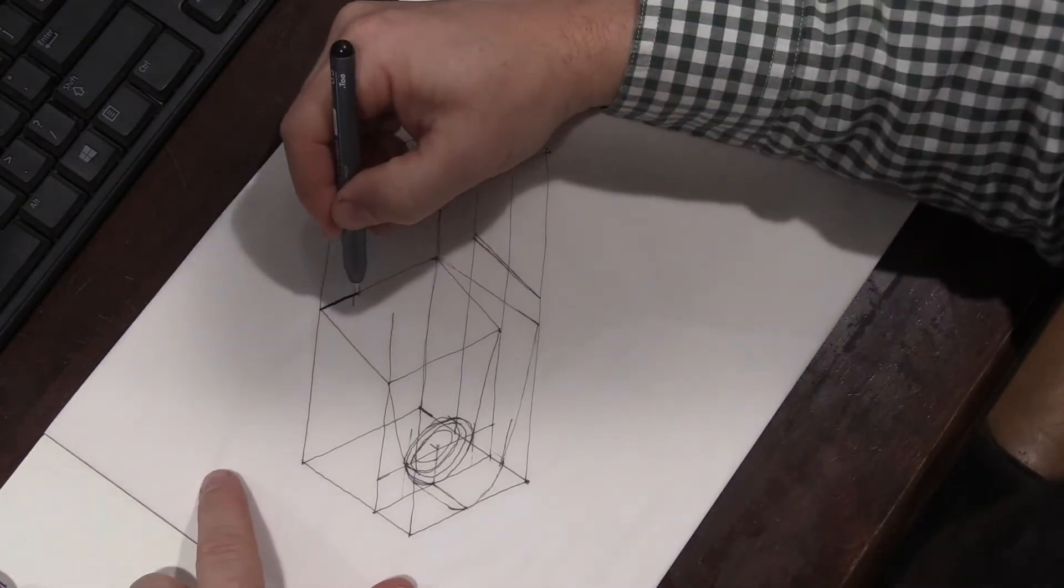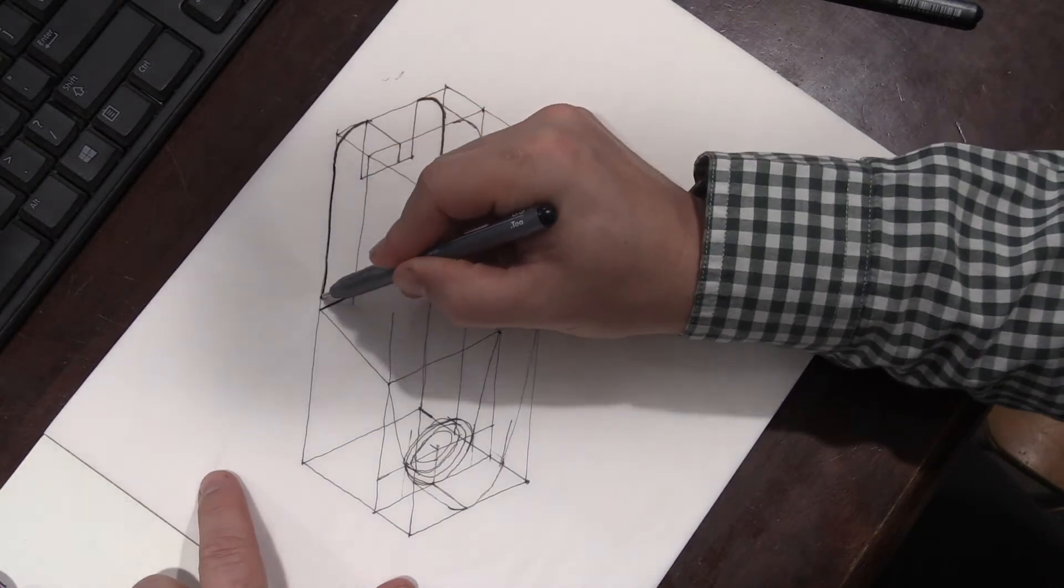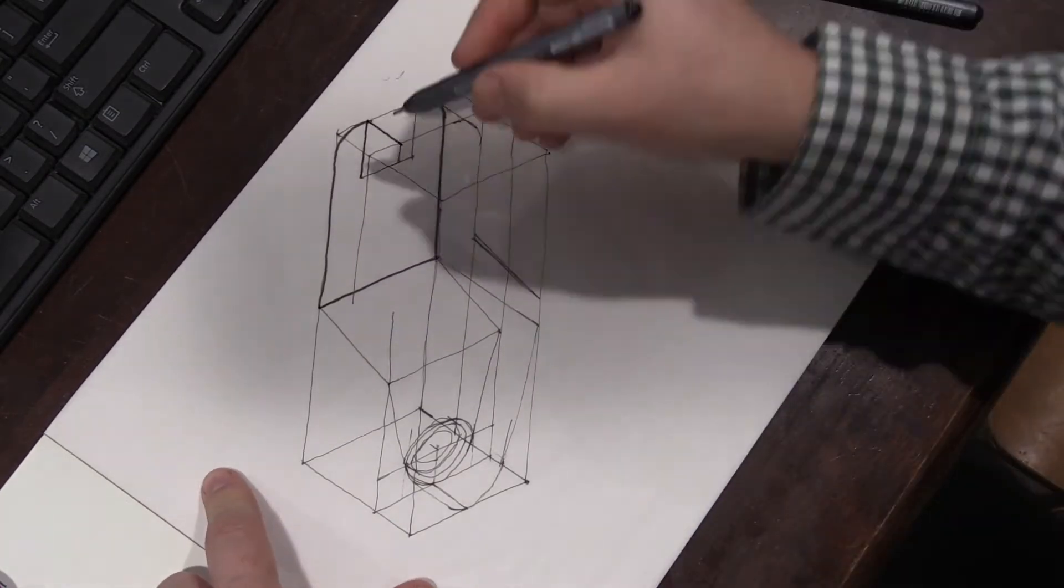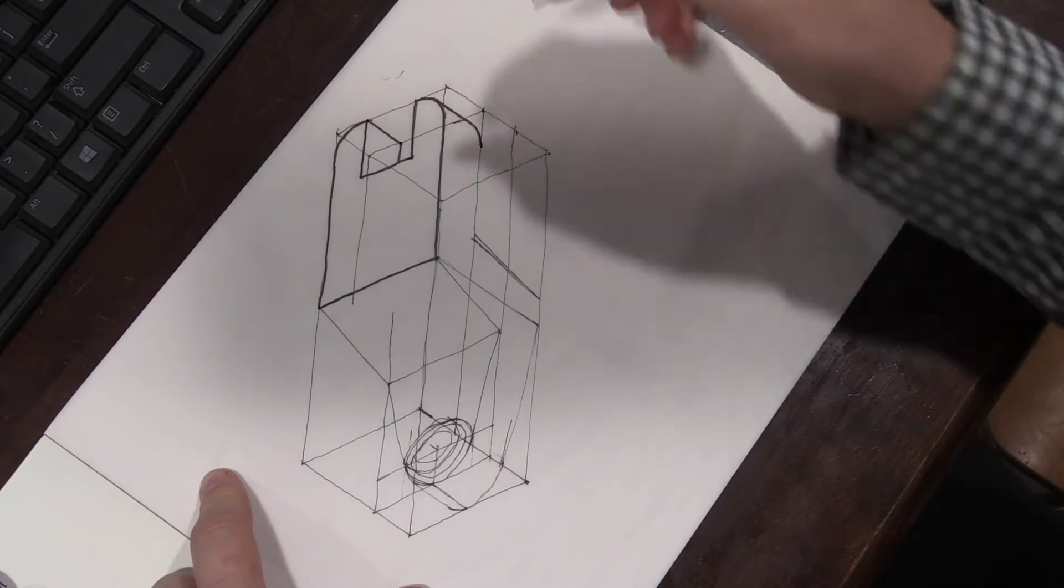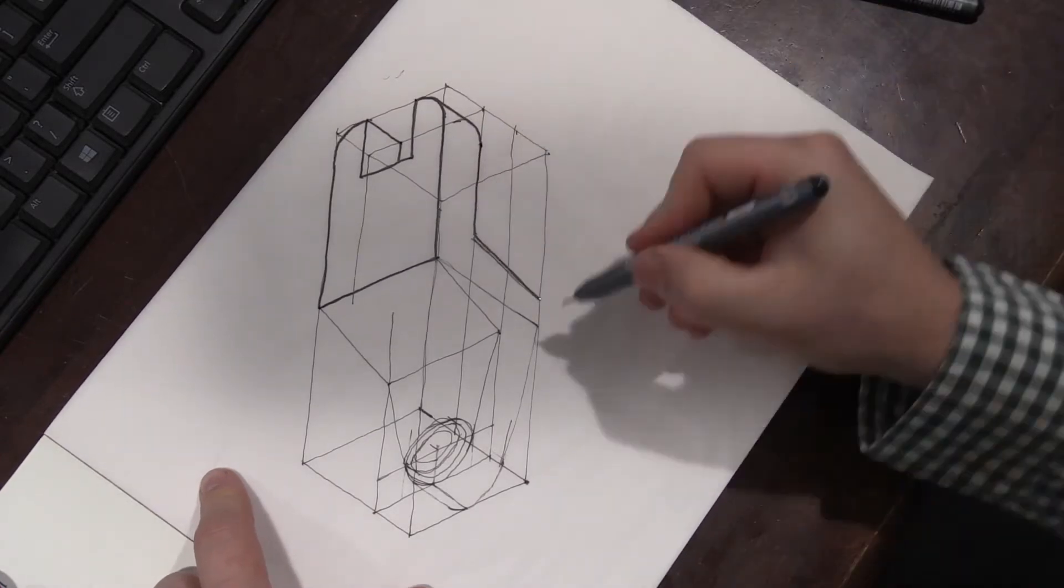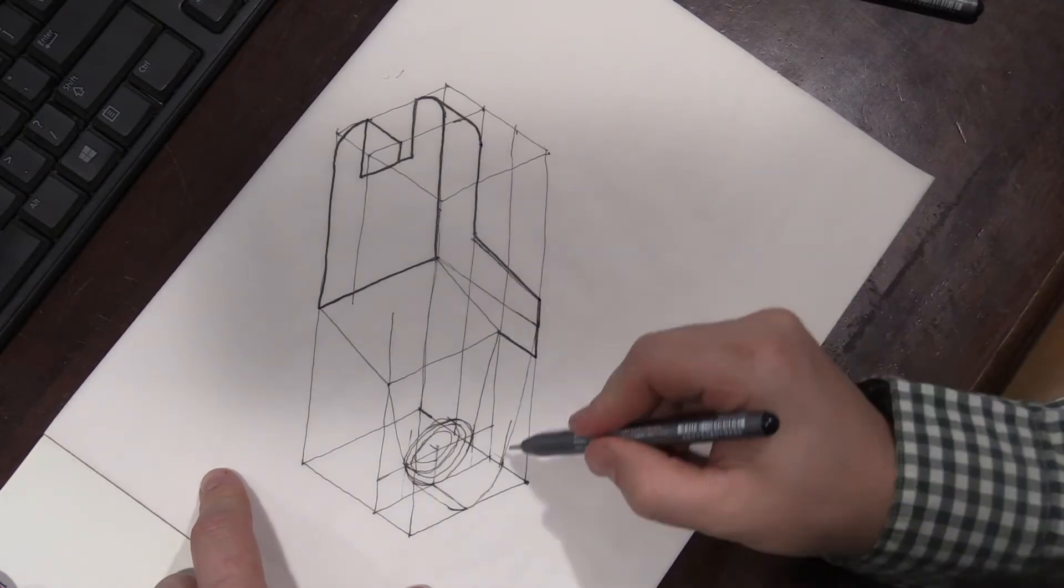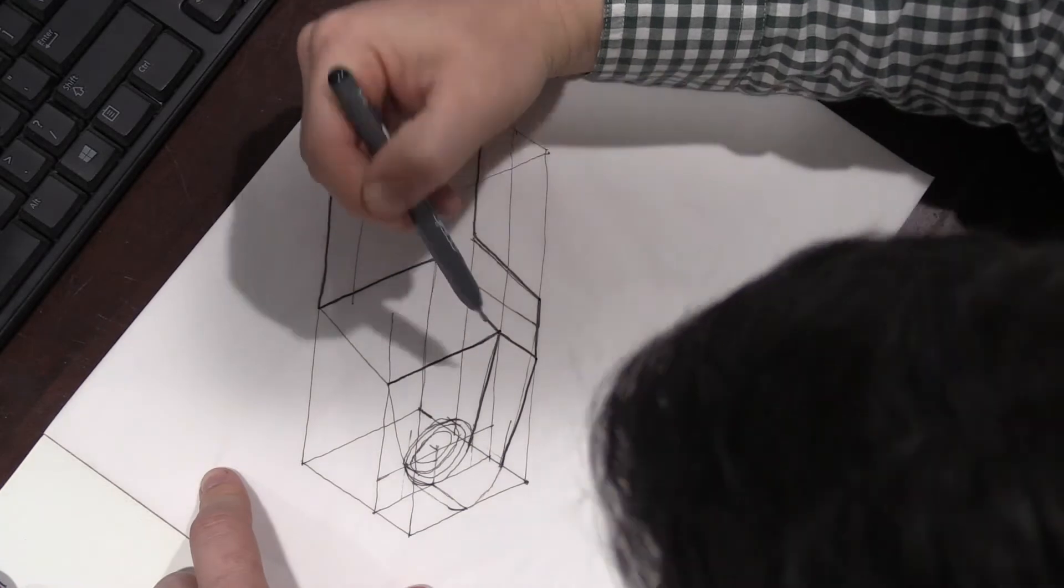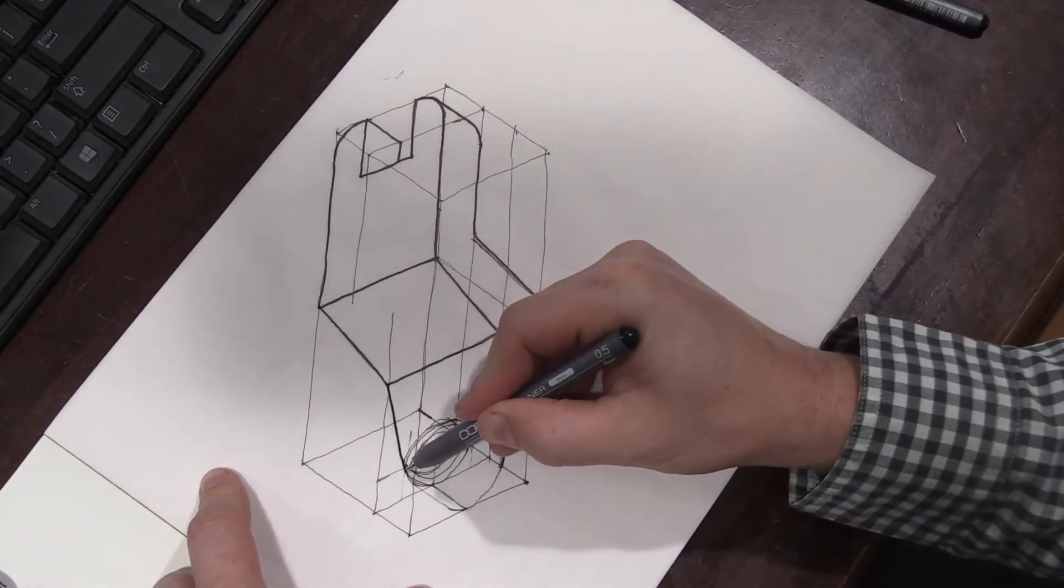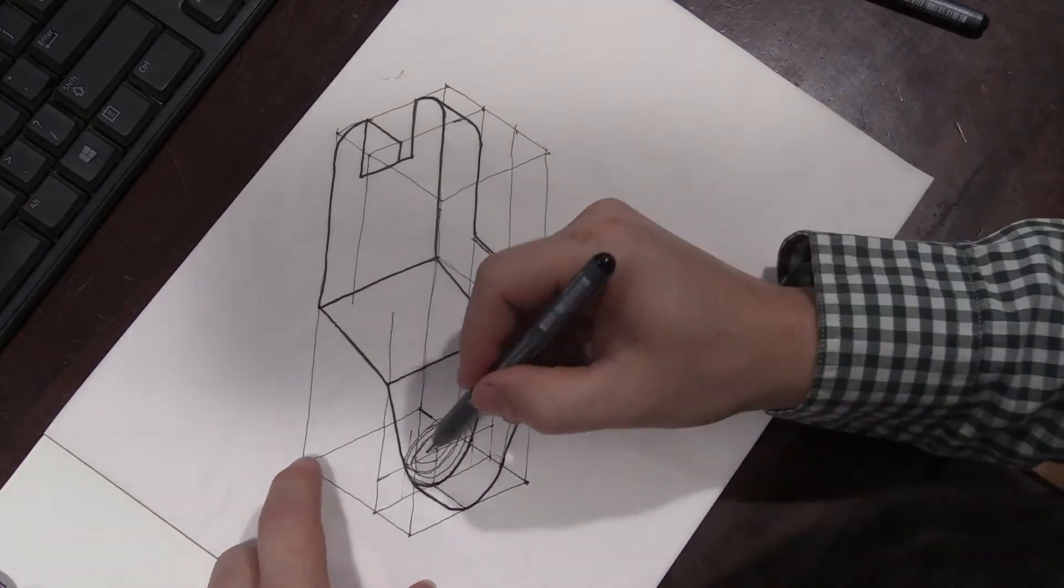Now I'm adding in with a darker pen, getting a darker line on just the object that I want to see. On your assignment, I'd recommend using a pencil to do the form and the divide, and then use a pen to do these object heavier thicker lines.